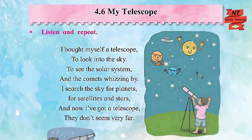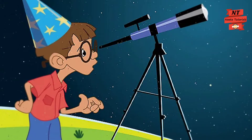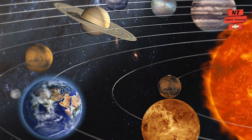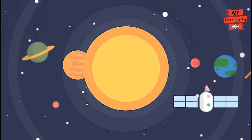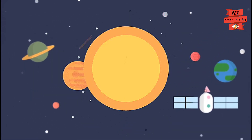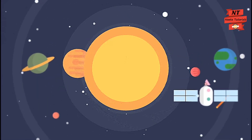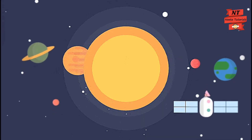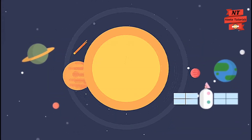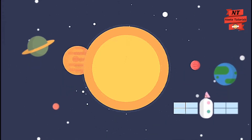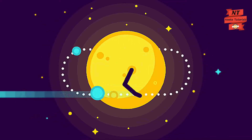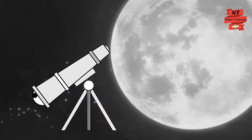Here we have an interesting poem called 'My Telescope' written by Tony Bradman. Let's sing the poem so that you are able to memorize it faster. 'I bought myself a telescope to look into the sky, to see the solar system and the comets visiting by. I searched the sky for planets, for satellites and stars, and now I've got a telescope they don't seem very far.'